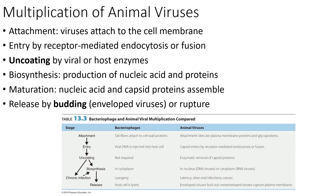The six steps are: attachment, penetration or entry, uncoating, biosynthesis, maturation — also known as assembly — and release. You'll notice some similarities in the names of these steps from our talk on bacteriophage. With attachment, step one, the virion is going to attach itself to a receptor site on the surface of the host cell. Remember the host range talk we had earlier — it's a very specific receptor that the virus is able to attach to.